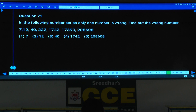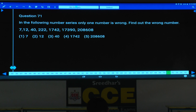Now what are the numbers given here? 7, 12, 40, 222, 17, 42, 17,000 and 2 lakh. The numbers are increasing at a very, very fast rate, isn't it?